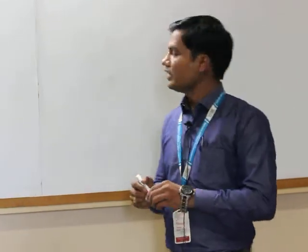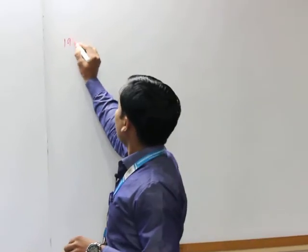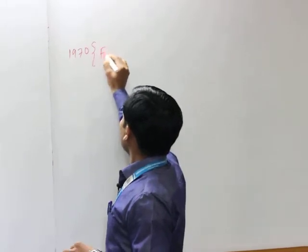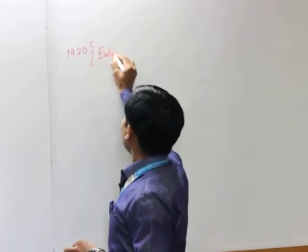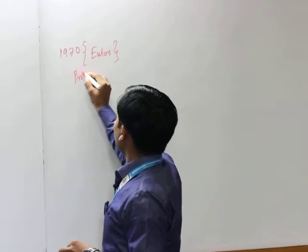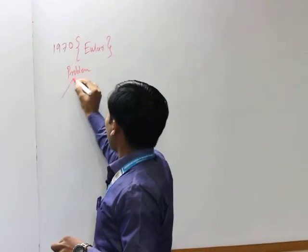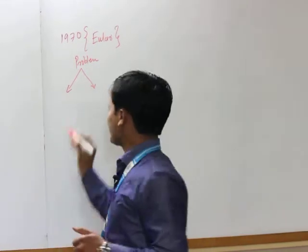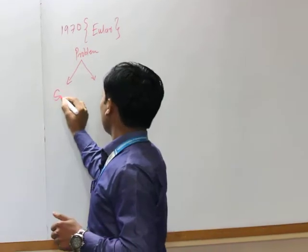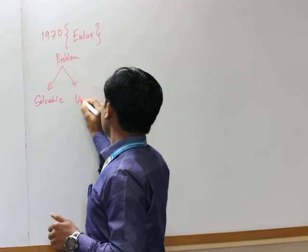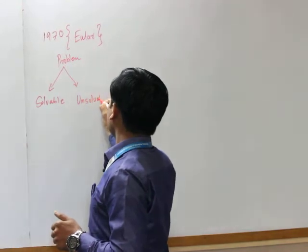The problem concept came into the picture in 1970. A scientist having the name Euler introduced a concept called problem. This problem has two types: the first one is solvable problem, and the second one is unsolvable problem.